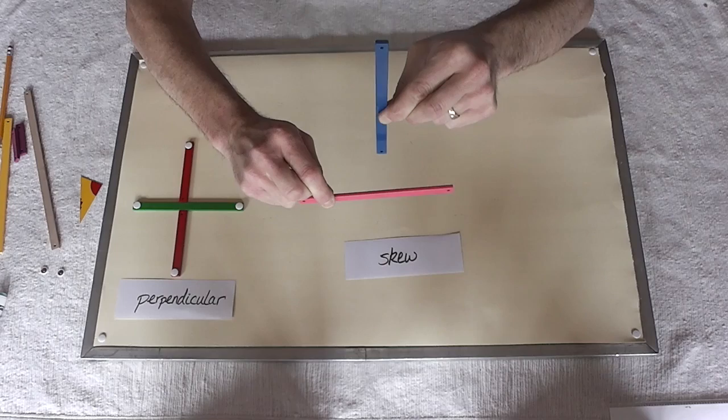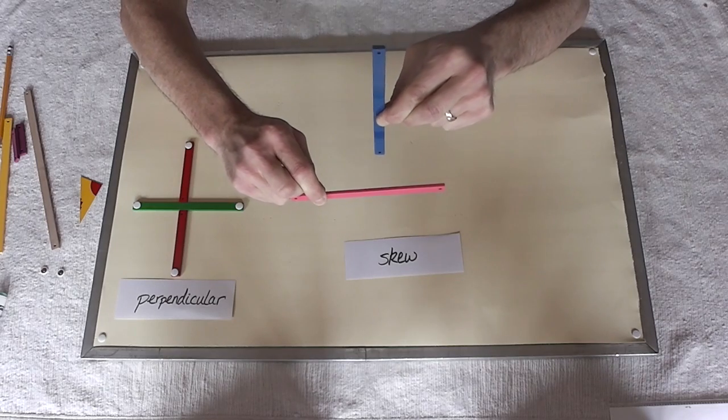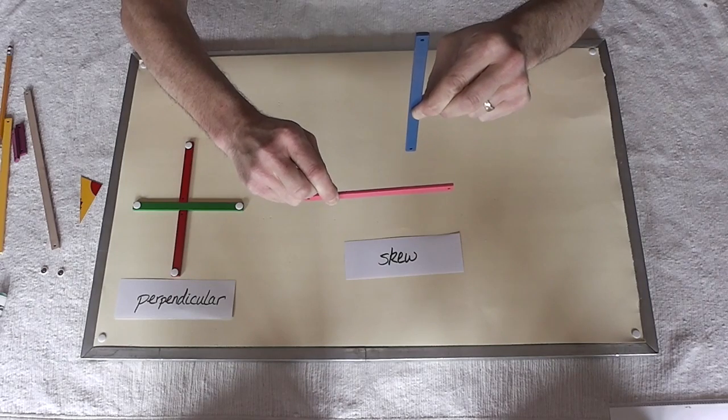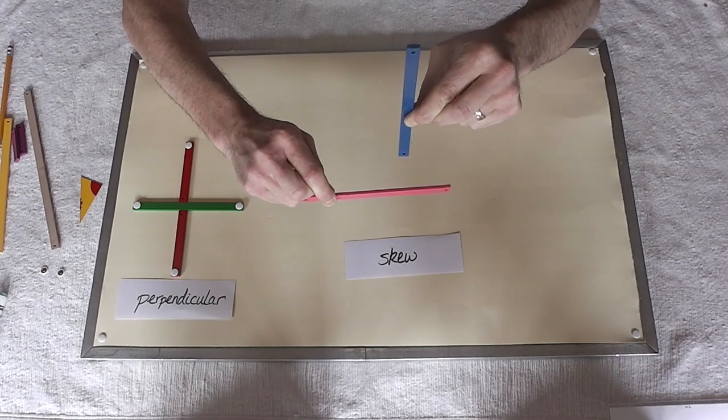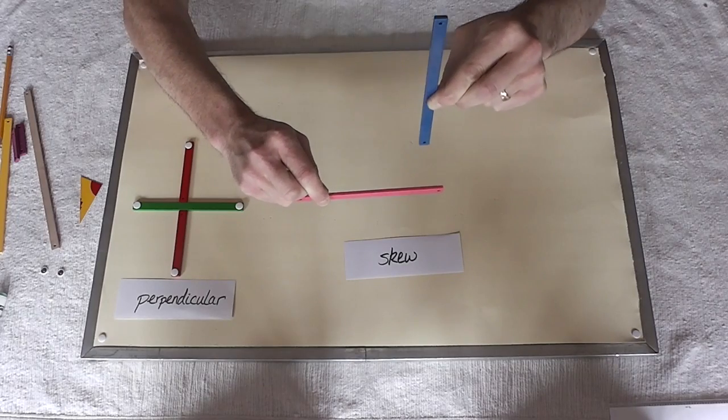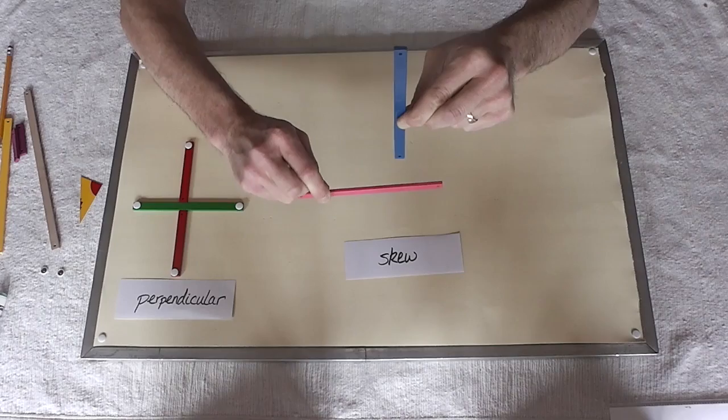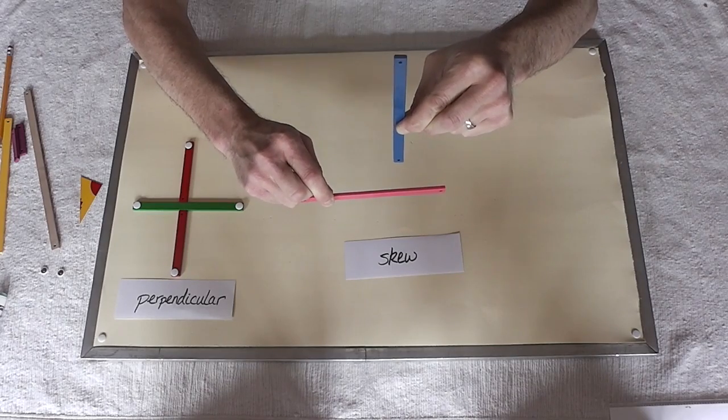Those are the relationships between two straight lines. So I guess, since we've done a lot of work with two straight lines, my next lesson should be about the relationships between three straight lines. And that's going to be coming up. Thanks for watching.